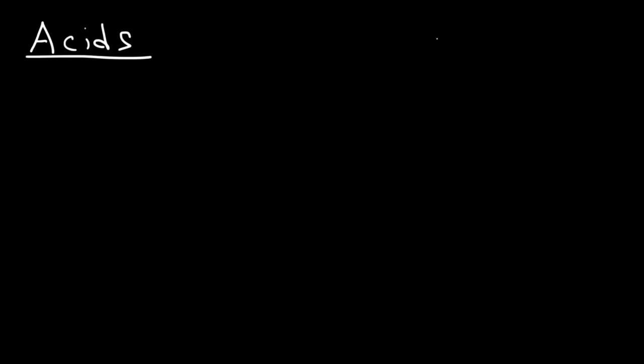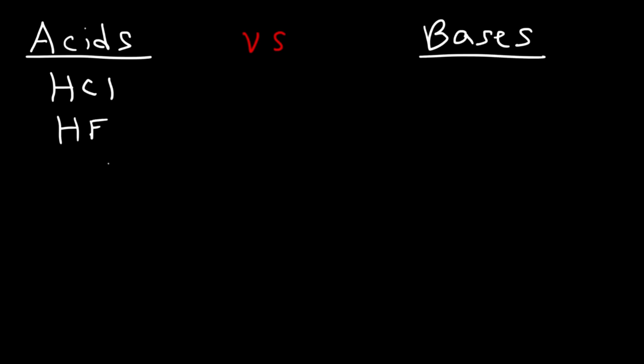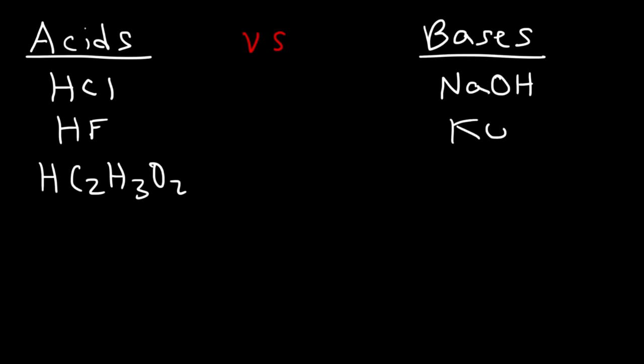In this lesson we're going to focus on the basics of acids and bases. One of the first things you need to be able to do is identify an acid or base given the chemical formula. Acids typically have a hydrogen in front of them, so HCl is hydrochloric acid, HF is hydrofluoric acid, and acetic acid HC2H3O2. Bases typically have a hydroxide ion like NaOH or KOH.